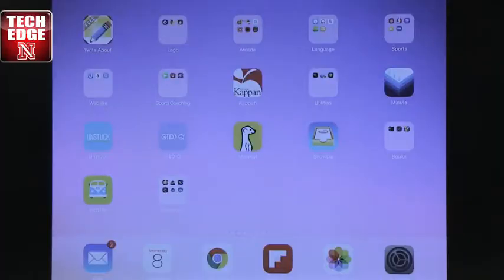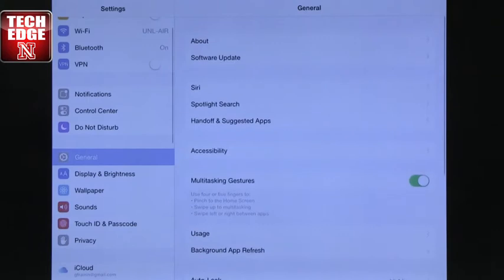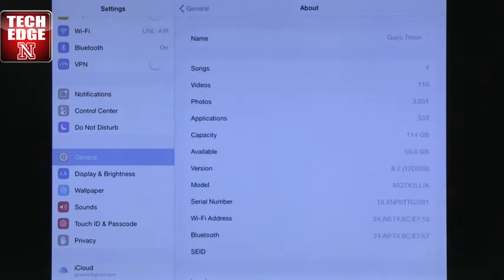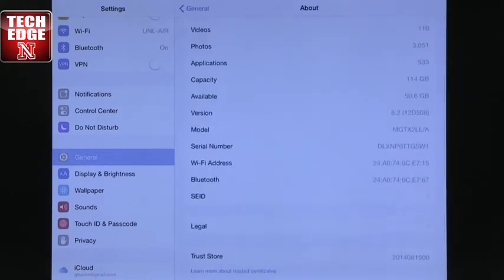The first thing to do is if you go into settings, and you can try this too, and you go to general, and you go to about, it lets you know a lot about what's going on. So it immediately tells you what your capacity is, in my case 114 gigabytes, and then how much you have available. If you're very low and available, you're completely full.